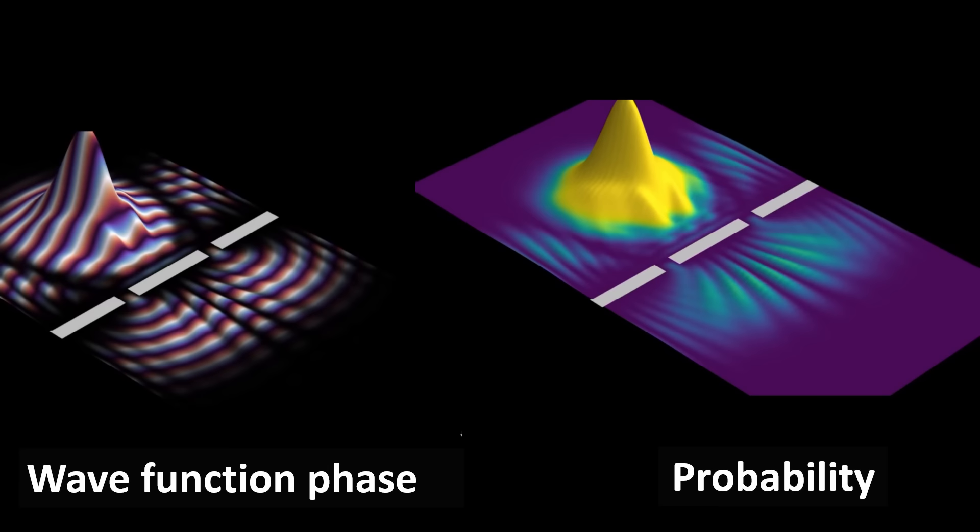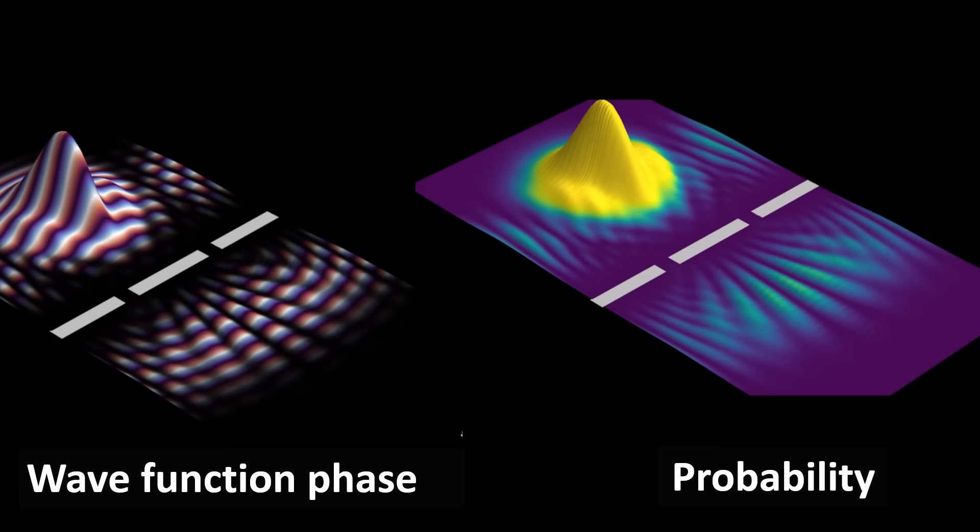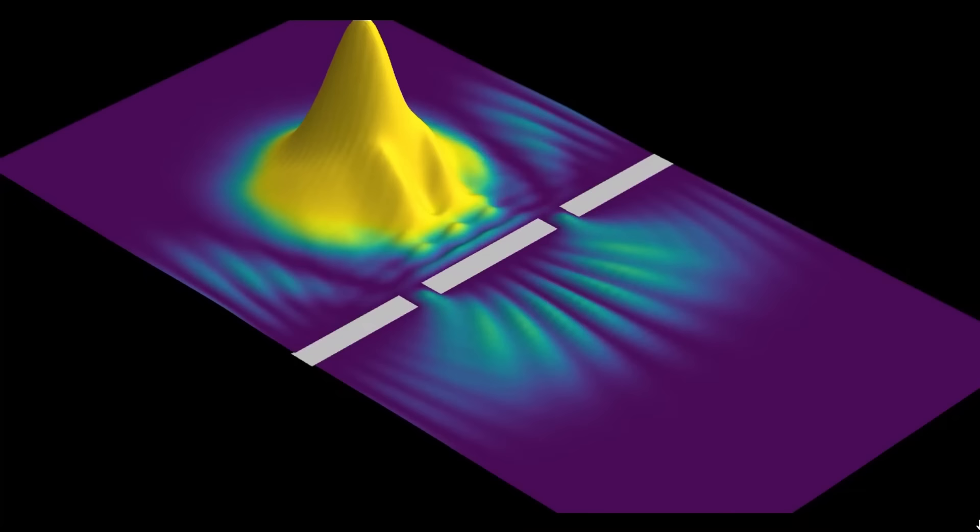And you see how the wave function of this particle redistributes itself in space. Part of the particle's wave is reflected and the other part is transmitted to the other side of the barrier, where we observe the formation of an interference pattern.